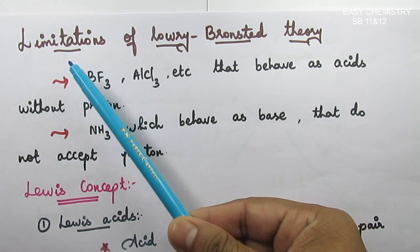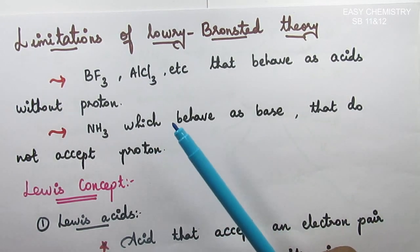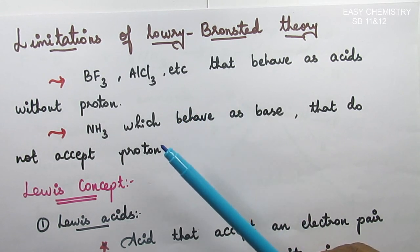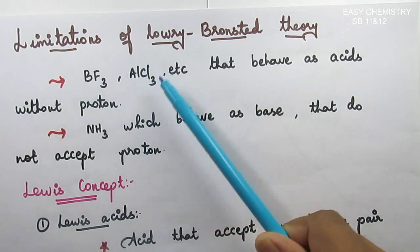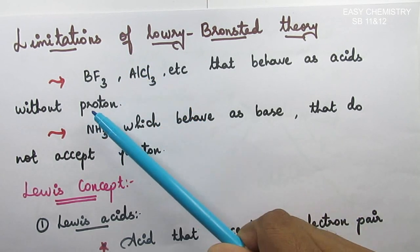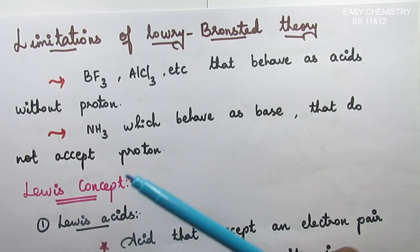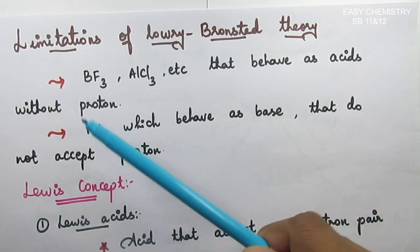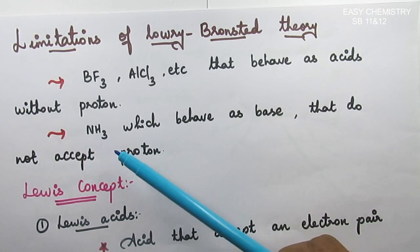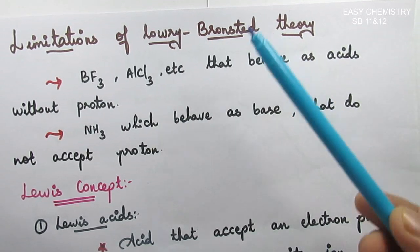Let us see limitations of Lowry Bronsted theory. What is the limitation? Ammonia which behaves as a base that do not accept proton. If proton is a base, it behaves as a base. So in the second question, Bronsted theory or proton theory is needed.